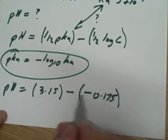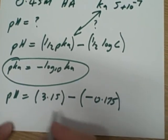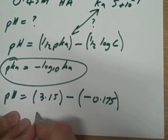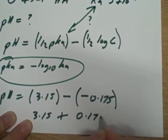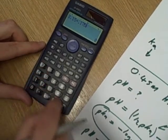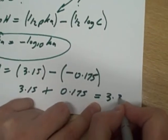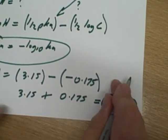So 3.15 plus 0.175 equals—let's do this properly in the calculator—plus 0.175 gives us 3.325. So, like I said, you've got to be really careful.